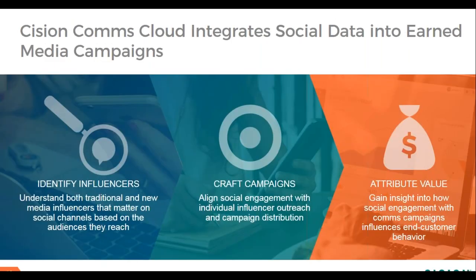Just as I covered the key areas of identifying influencers, crafting campaigns, and attributing value, I want to talk about how social fits into those. For identifying influencers, we first monitor conversations across all earned media channels including key social media networks to identify which influencers are discussing relevant brands, industries, or topics. For crafting campaigns, by evaluating engagement with specific social posts and the individuals who participated, we can determine which content is most impactful to audiences that matter. For attributing value, we can attribute value to social media efforts and share success with key stakeholders, much the same way as we can with earned media campaigns.